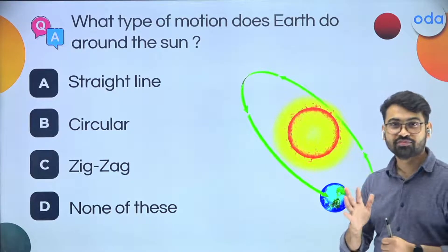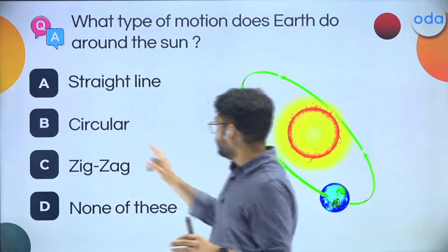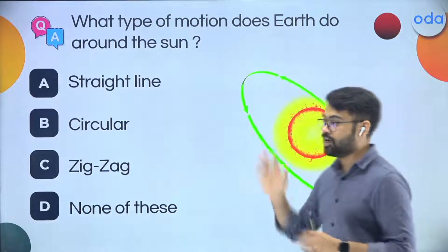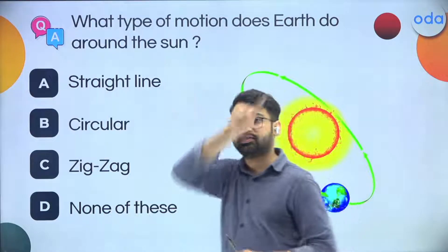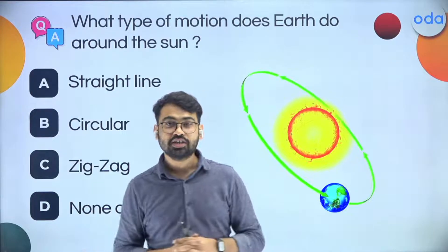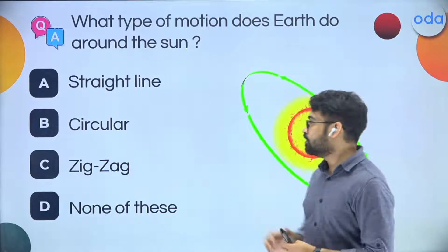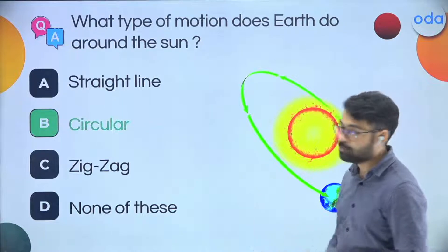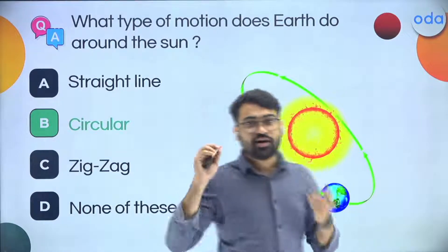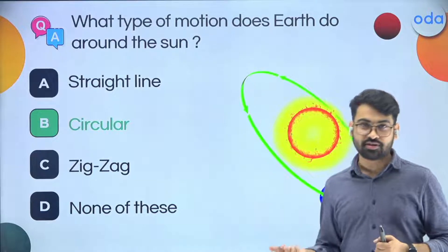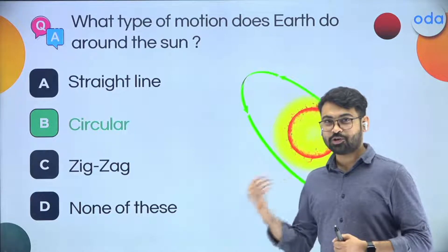Straight line motion — no chance. Circular? Yes, maybe this is circular — I'll go with B. Zigzag? No, not really, so C is incorrect and A is incorrect. I'm going to go with option B — it is circular motion. And I am absolutely correct! Well done. I hope you also know that Earth goes around the Sun in a circle, just like the Moon goes around the Earth in a circle.